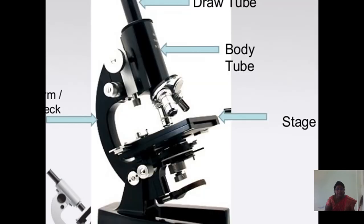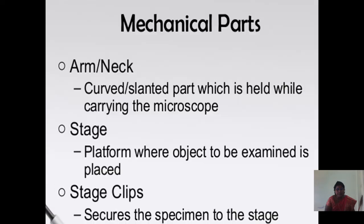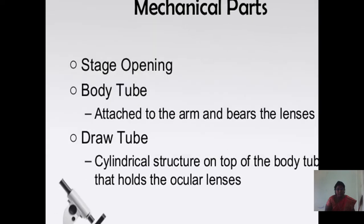Continuing with mechanical parts: the arm or neck is the curved or slanted part which is held while carrying the microscope. The stage is the platform where the object to be examined is placed. Stage clips secure the specimen to the stage.